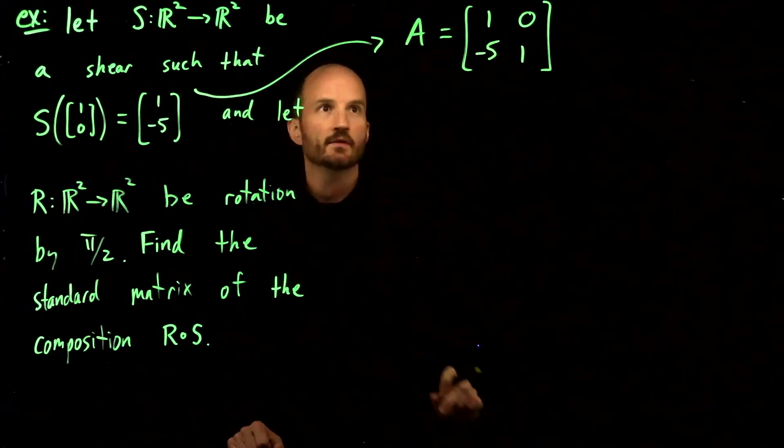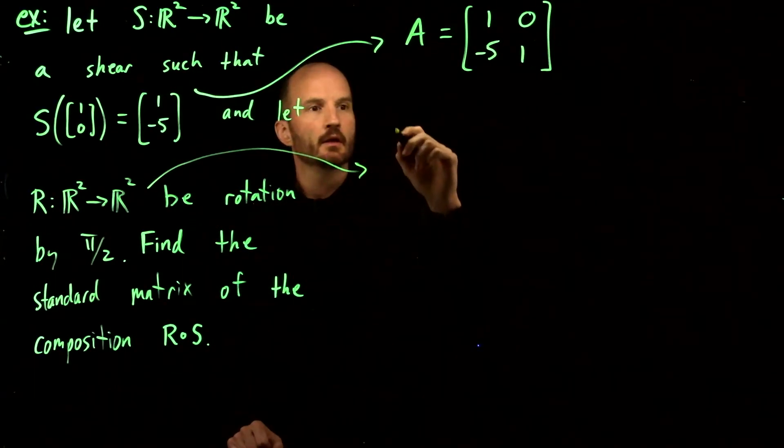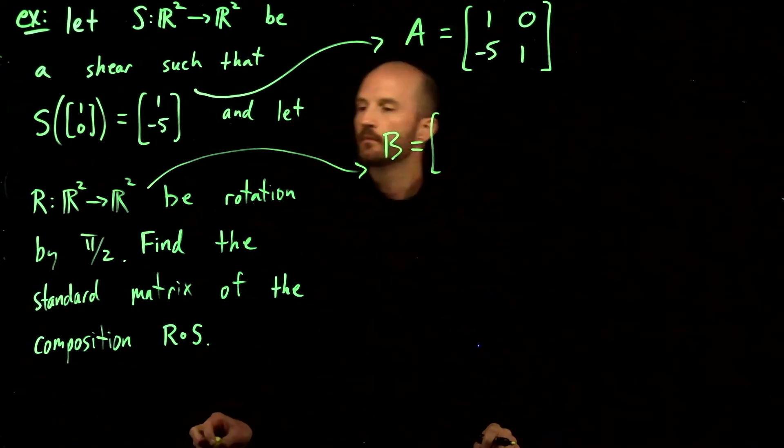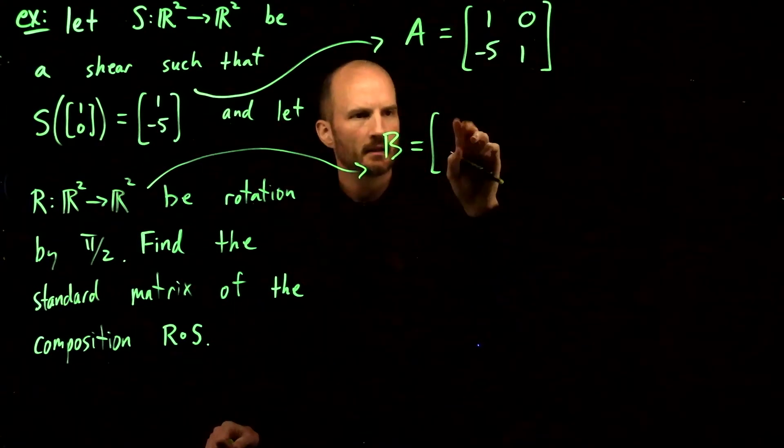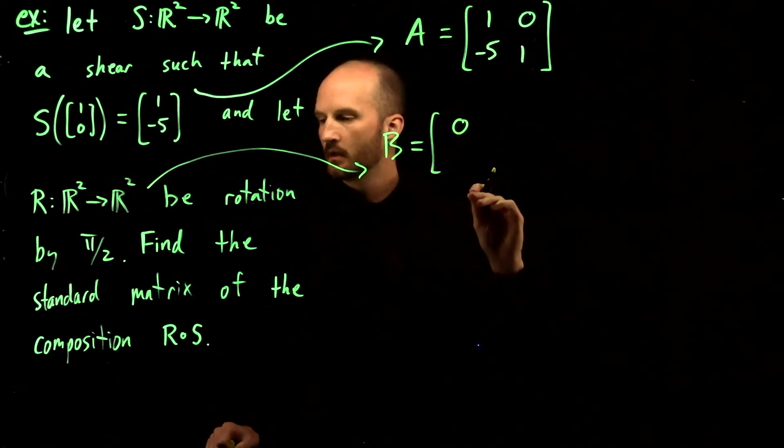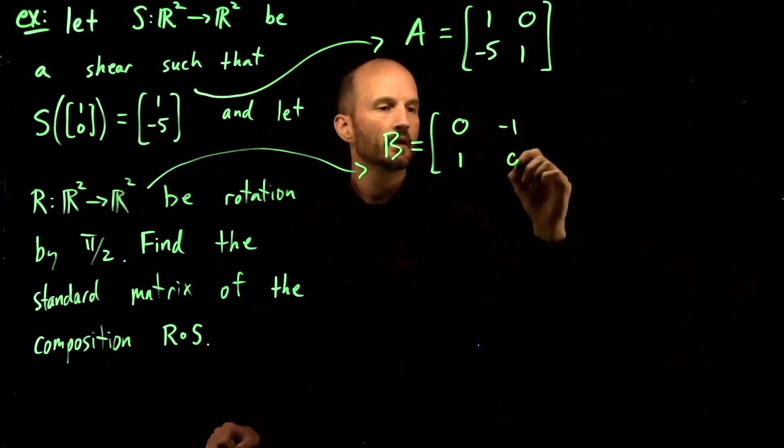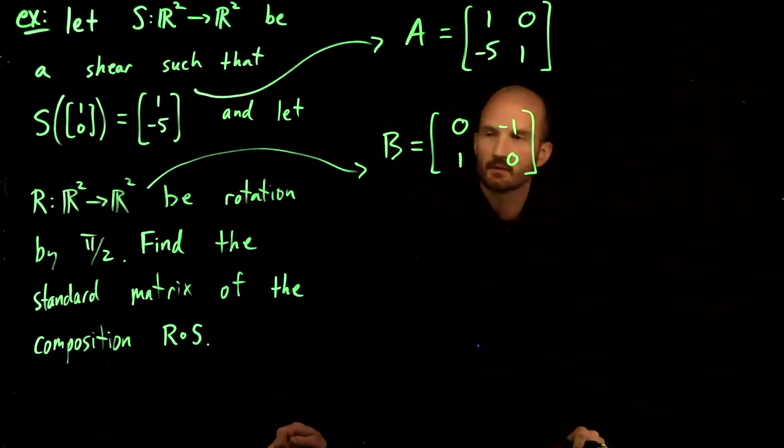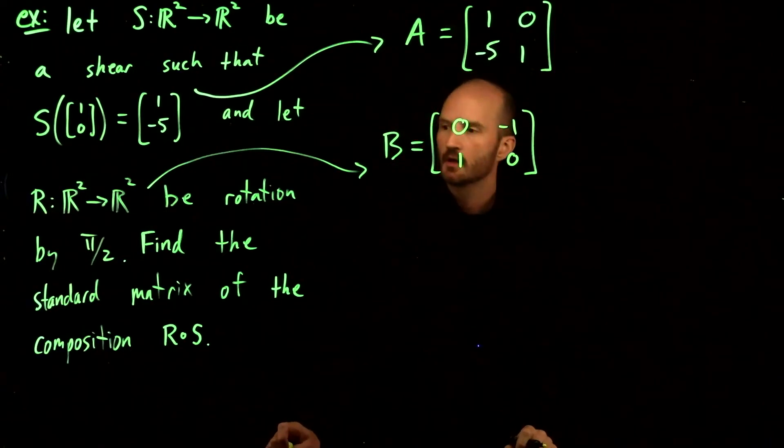The rotation, we'll call its corresponding standard matrix B. Rotation by π/2. What do we get? Cosine of π/2 is 0, sine of π/2 is 1, and you get a -1 and a 0. I expect you to memorize shears and rotations and be able to quickly produce their standard matrices.